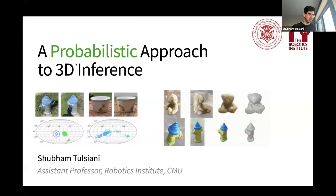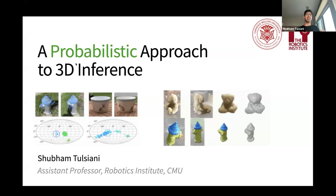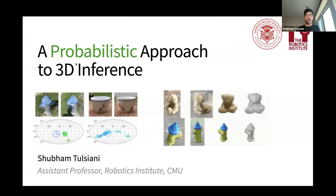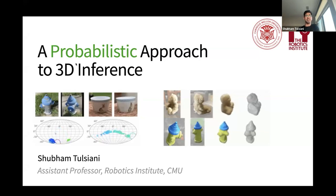I'll go ahead and start. Super excited to be sort of virtually here — I had hoped to be there in person, but unfortunate logistic issues. Thanks to the organizers for allowing me to do this remotely. I work in 3D inference, trying to think about how we understand the 3D world from images. Today I want to talk about a probabilistic approach to that.